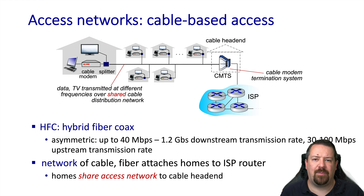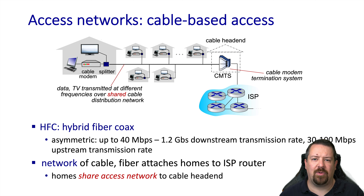One of the key properties of the access network is whether it's dedicated or shared. A cable network is an example of a shared network, meaning the data bandwidth is shared amongst all the residences on that particular cable run. Modern cable systems can easily exceed a gigabit per second of downstream bandwidth, and even a gigabit in the upstream direction as well. The standards governing the protocols used in the cable system are known as DOCSIS, with modern systems typically running DOCSIS 3.1.